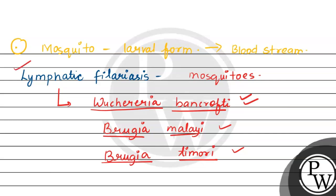So our answer is, since the question specifically asked about helminth disease, the disease is lymphatic filariasis which is caused by Wuchereria bancrofti. Students, I hope this helps. All the best and thank you.